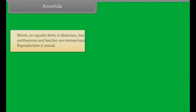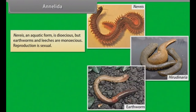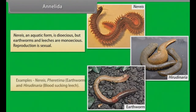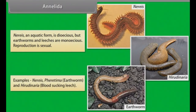Nereis, an aquatic form, is dioecious, but earthworms and leeches are monoecious. Reproduction is sexual. Examples: Nereis Ferretima, that is earthworm, and Hirudinaria, that is blood-sucking leech.